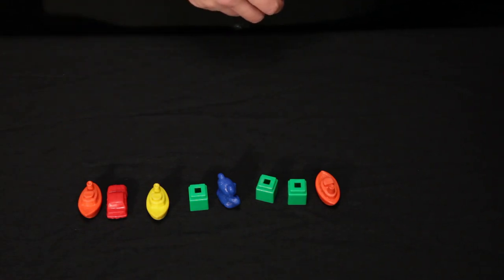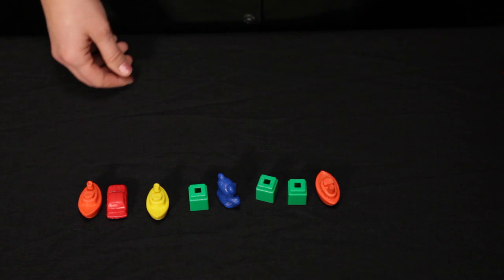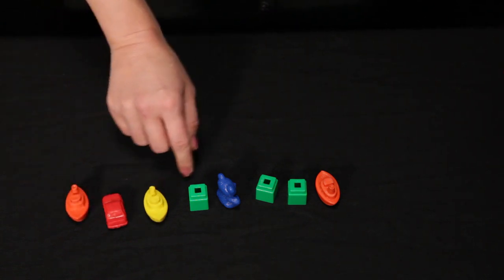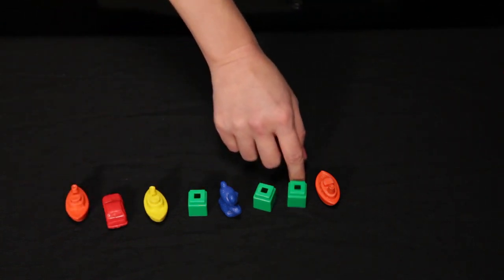And then the fifth counting principle is order irrelevance. I can count objects from left to right, one, two, three, four, five, six, seven, eight.